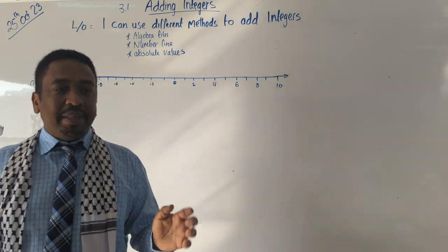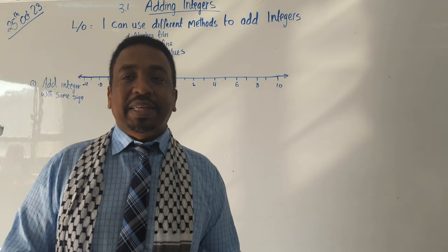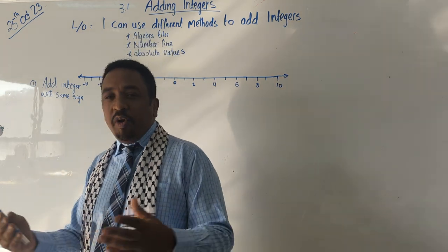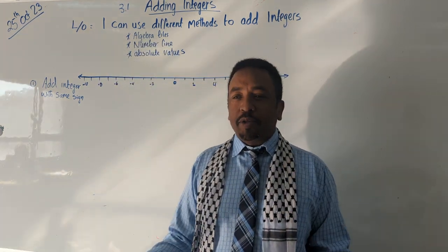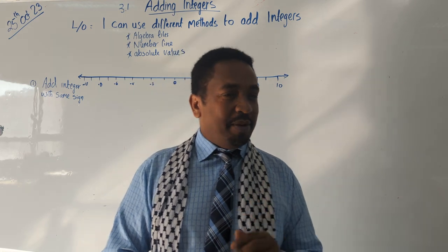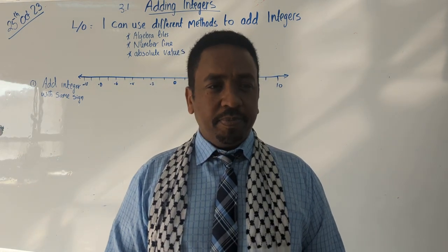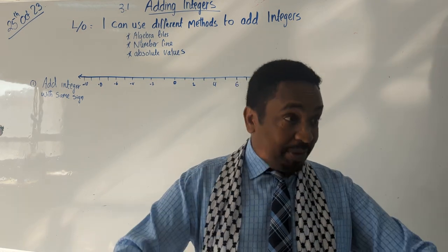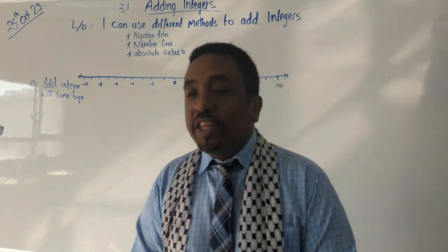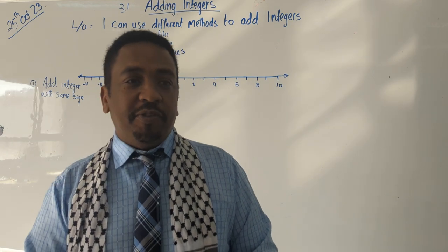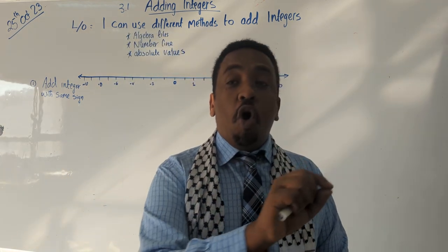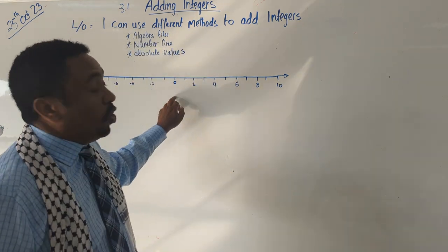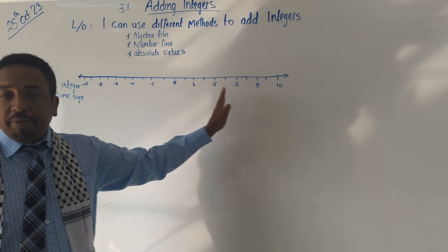Hopefully by the end of the lesson everybody will understand it. But let me start with this question: what is an integer? How many of you know or have heard about what integers are? Who can tell me? Integers are numbers which include all the positive numbers, the negative numbers, and also zero. All those numbers are whole numbers.